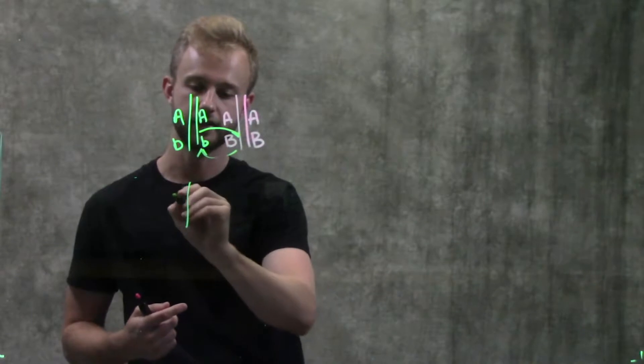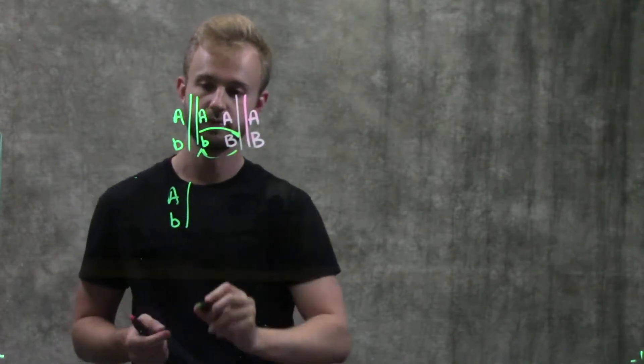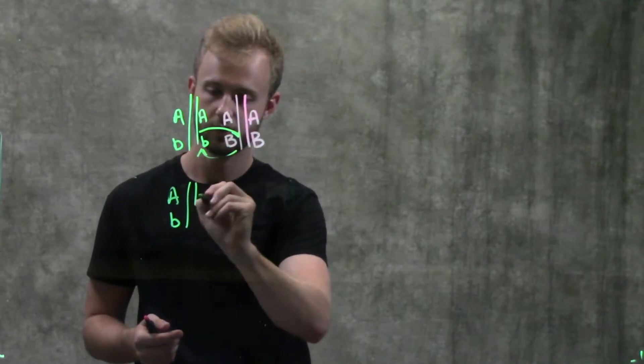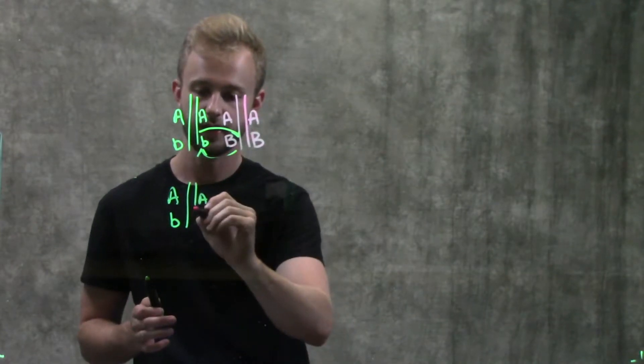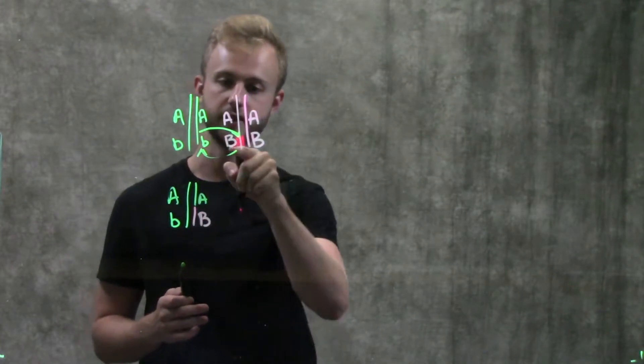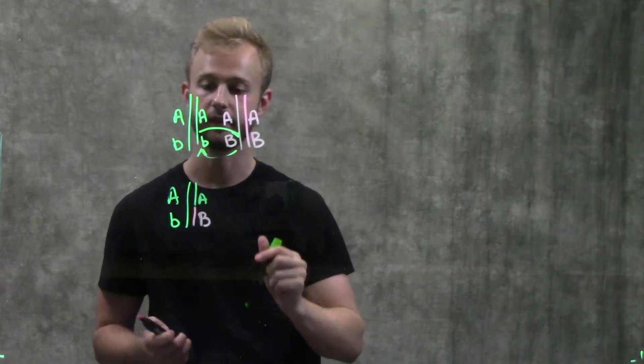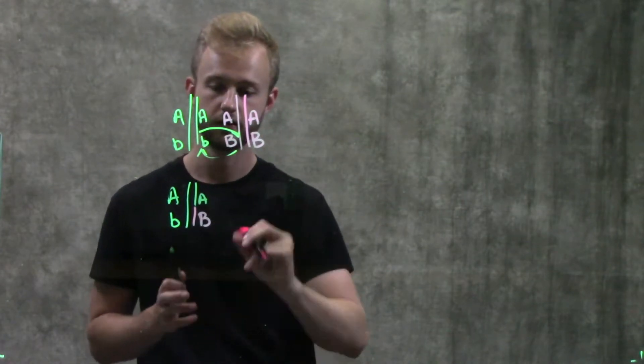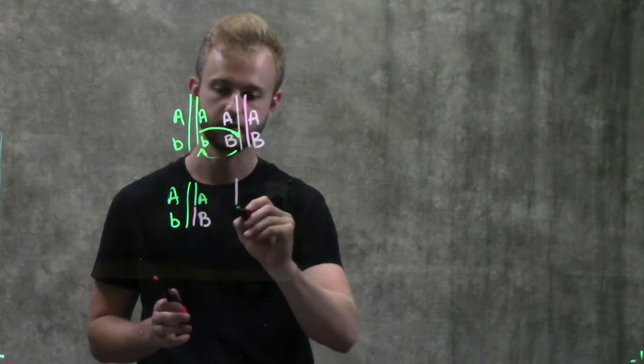So what that's going to look like is you'll still have the AB right there. We'll have this A still, but now we have a part of this second chromosome right there. So this other one would look like this.